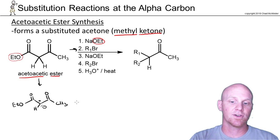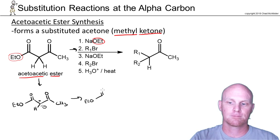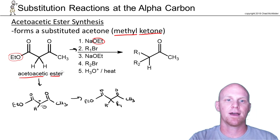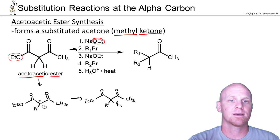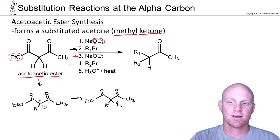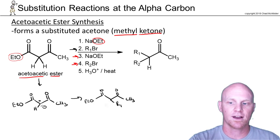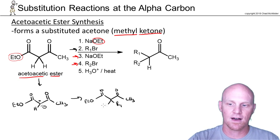That enolate is going to attack in an SN2 reaction when we add an alkyl halide in step two. The net result is one of our H's has been replaced by R1. We then repeat that same sequence: sodium methoxide followed by another alkyl halide for steps three and four. Sodium methoxide deprotonates the other H, and then we do another SN2 reaction with the enolate, replacing it with a second alkyl halide.